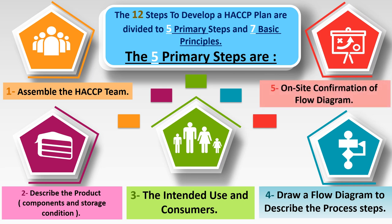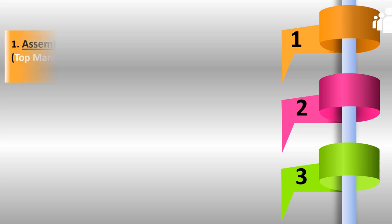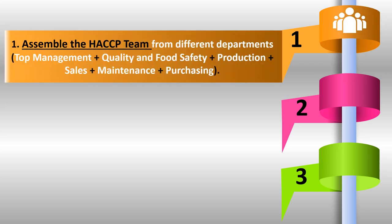For our orange juice example, the HACCP team will be assembled from different departments: top management, quality and food safety, production, sales, maintenance, and purchasing. We will understand later the benefits and the importance of each department's role.